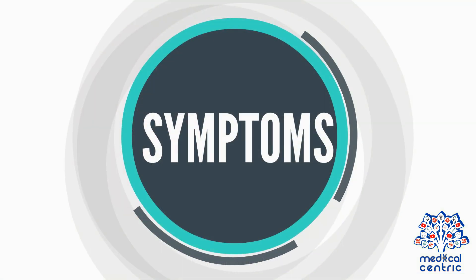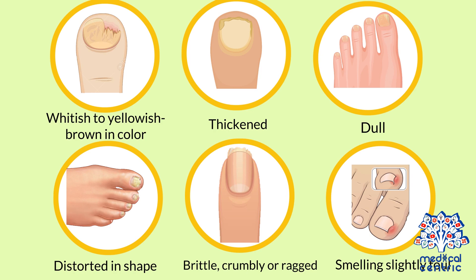Symptoms: Nails that are infected with fungus typically are whitish to yellowish-brown in color, thickened, dull, distorted in shape, brittle, crumbly, or ragged, and smelling slightly foul.